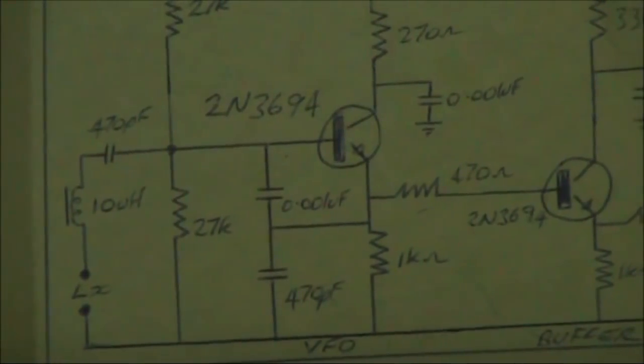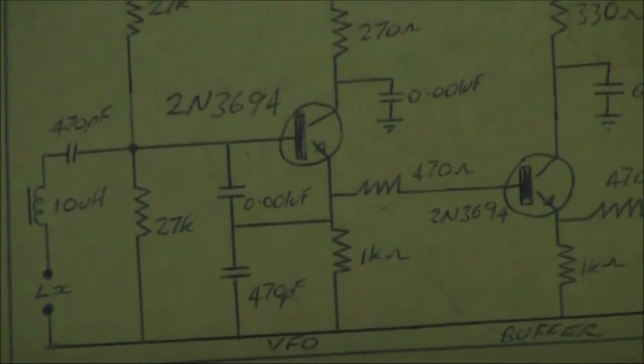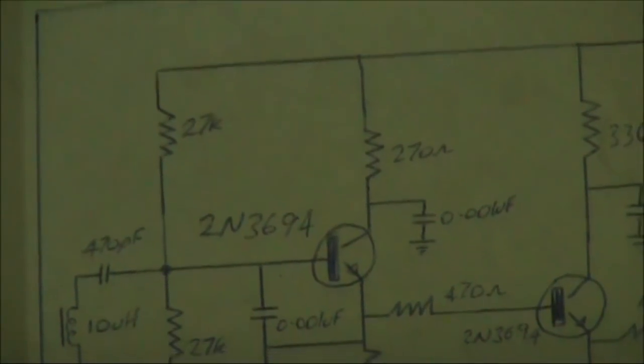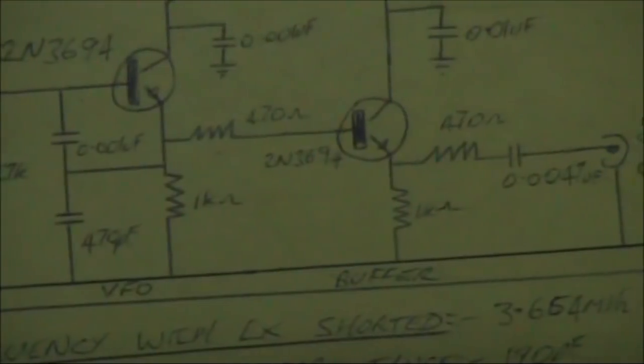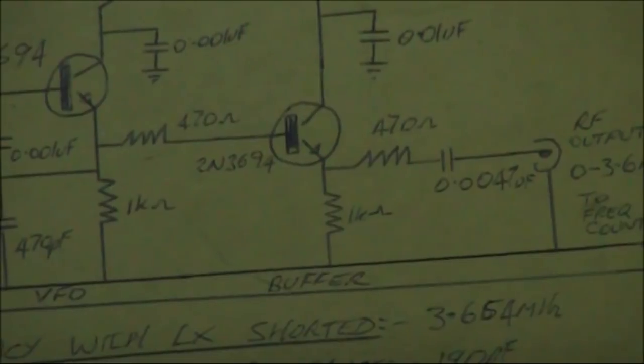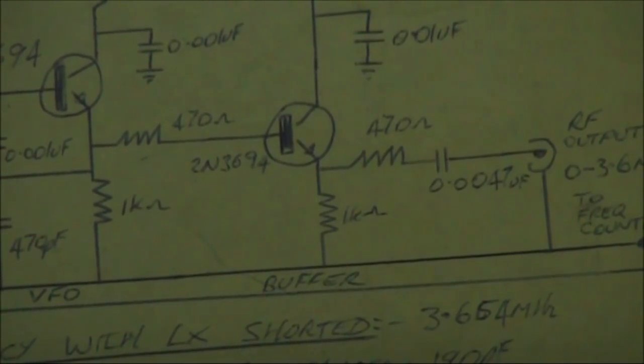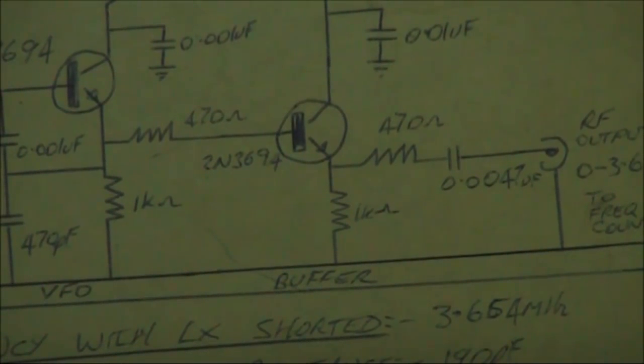The oscillator is just a very standard Colpitts oscillator circuit. And the buffer stage here just provides some isolation. So that means that when you connect the multimeter, you don't pull the frequency. Which would be the case if you were not using the buffer stage.